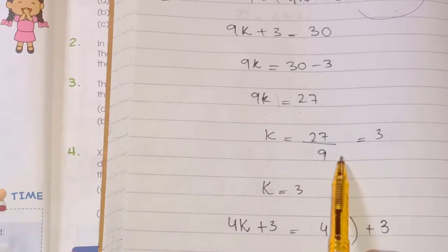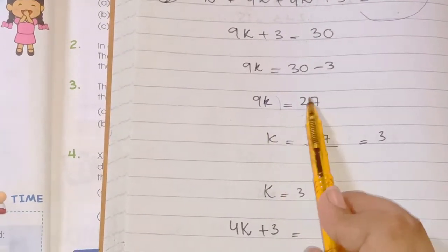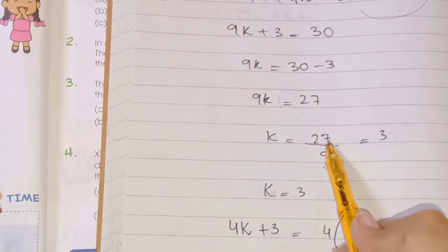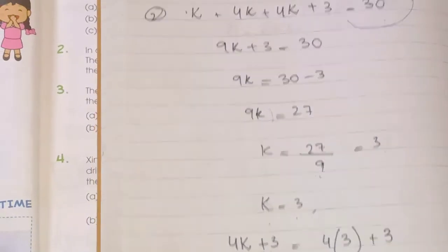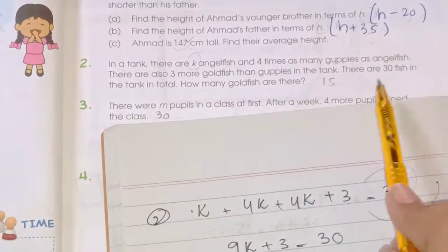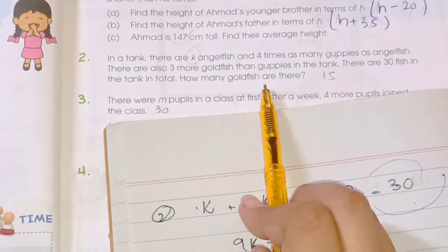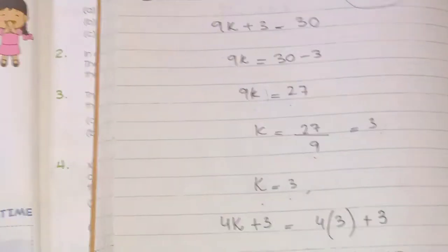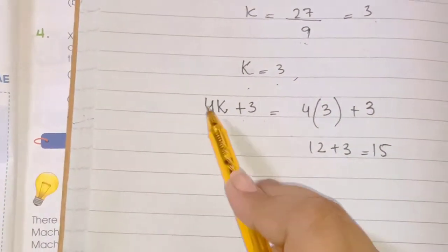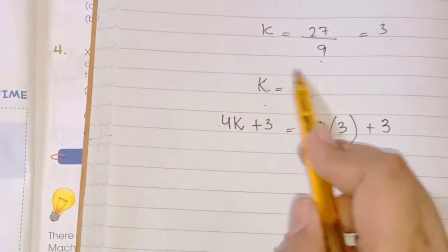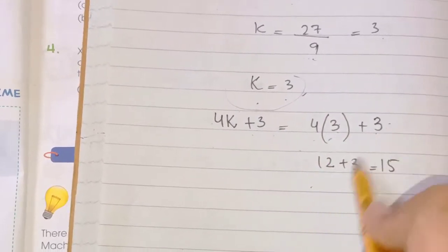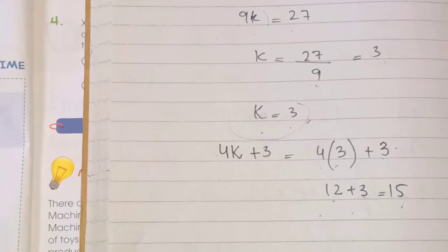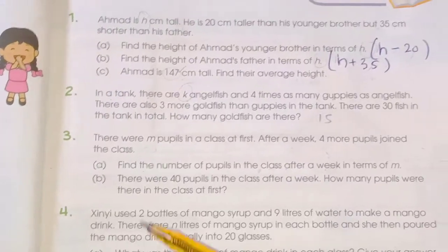27 divided by 9 equals 3, so k equals 3. Now to find the number of goldfish: goldfish equals 4k plus 3, which is 4 times 3 plus 3, equals 12 plus 3, equals 15. It means among the 30 fishes, 15 are goldfish.